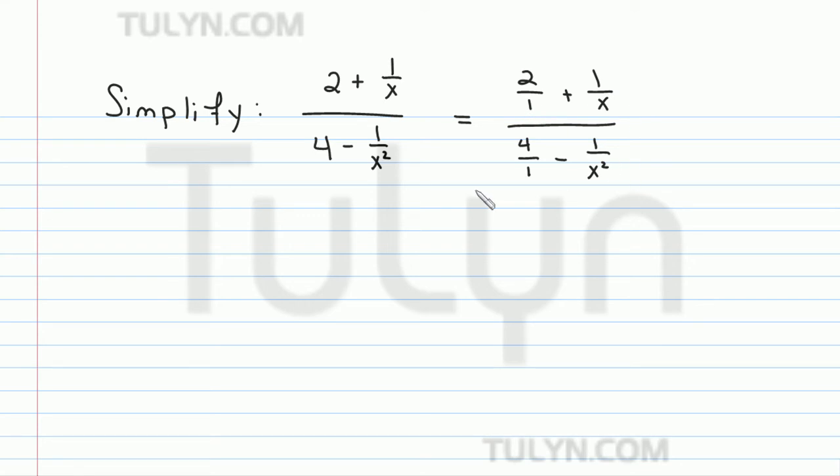So we're looking for the LCD of 1, x, and x squared, and that number is x squared. So we want to multiply the top of the fraction by x squared and the bottom by x squared.